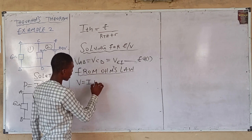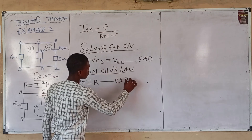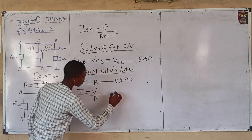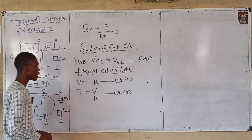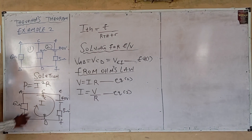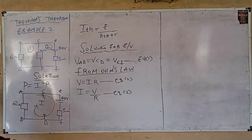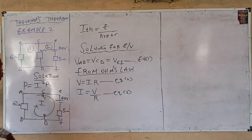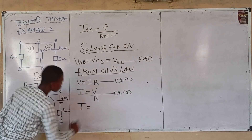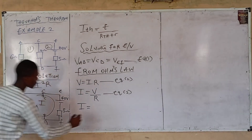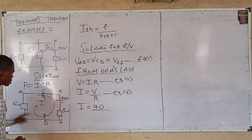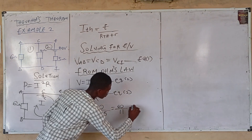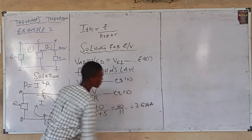From Equation 2, I equals V over R — call this Equation 3. Applying Equation 3 to this circuit to get the current: I equals 40 volts divided by the total resistance of 6 plus 5, which is 40 divided by 11, equal to 3.636 amperes.